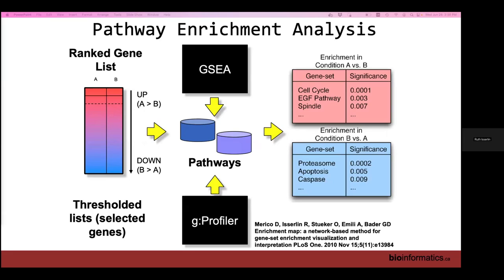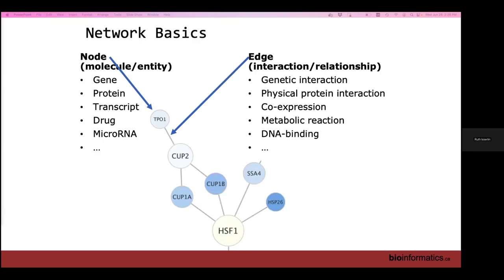We used two different methods. For our ranked list we used GSEA with pathways, producing sets of up-regulated and down-regulated pathways. For our thresholded list we used g:Profiler with a subset of our gene list. It's important to note — if you have up-regulated and down-regulated genes you can actually run g:Profiler twice with two different gene sets and generate two sets of results to visualize together.